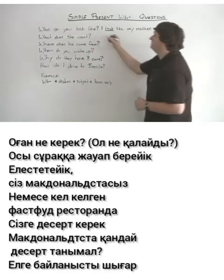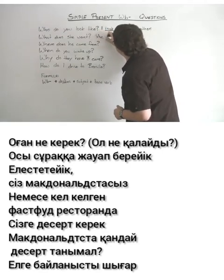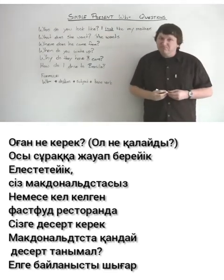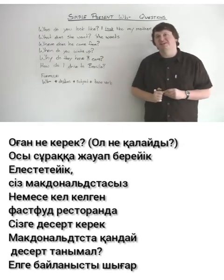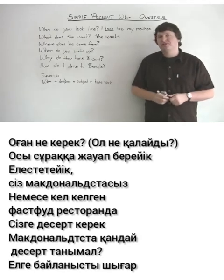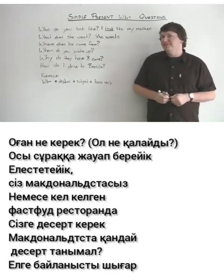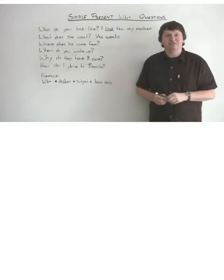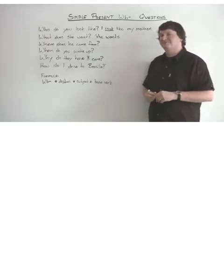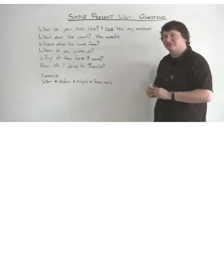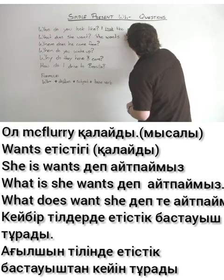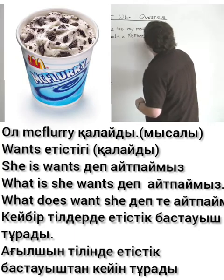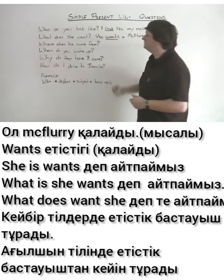What does she want? Let's ask this question and give an answer. She wants — imagine you are at McDonald's or any fast food restaurant and you want dessert. A popular dessert there might be an ice cream cone or a McFlurry. So she wants a McFlurry, for example. The verb is 'wants,' not 'she is wants.'